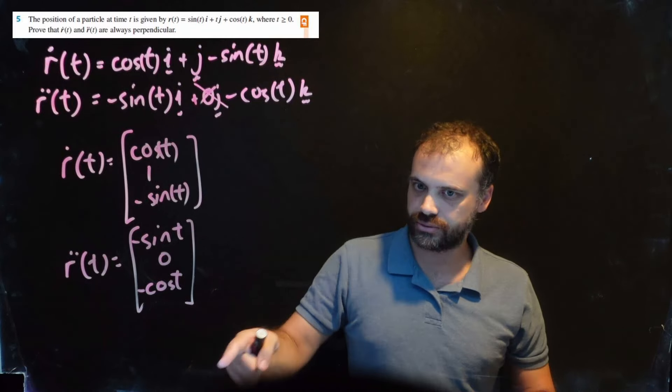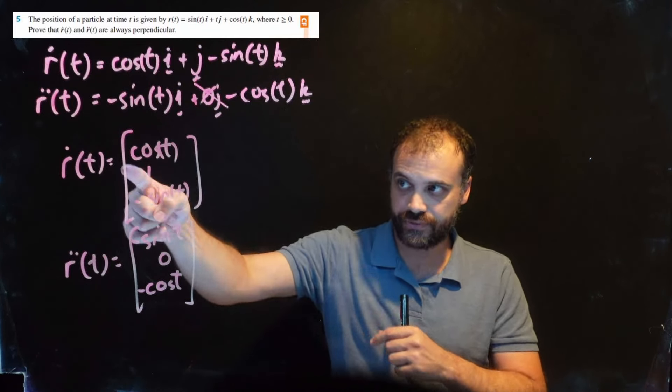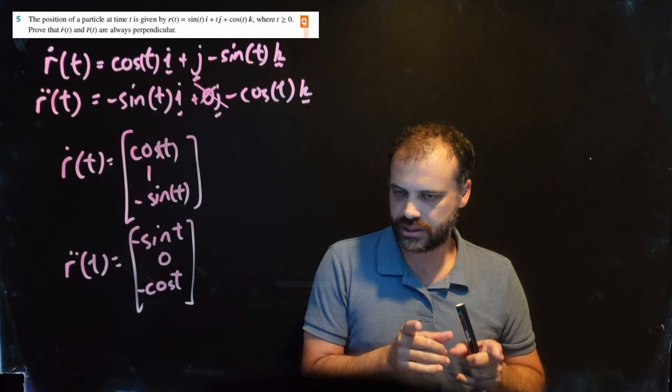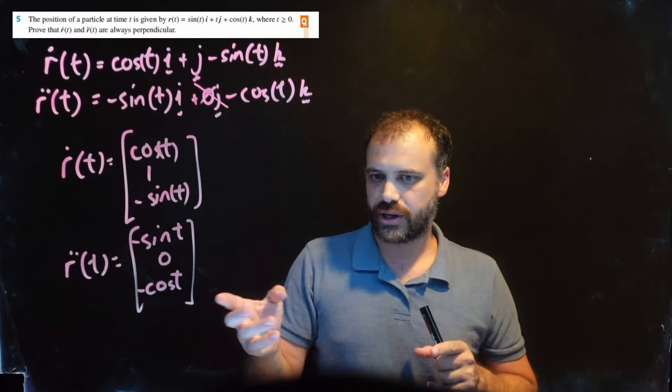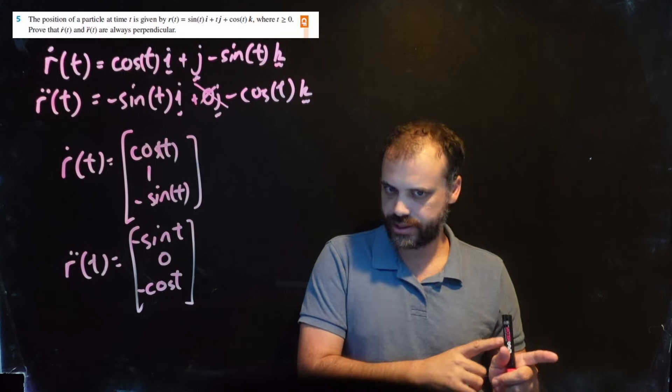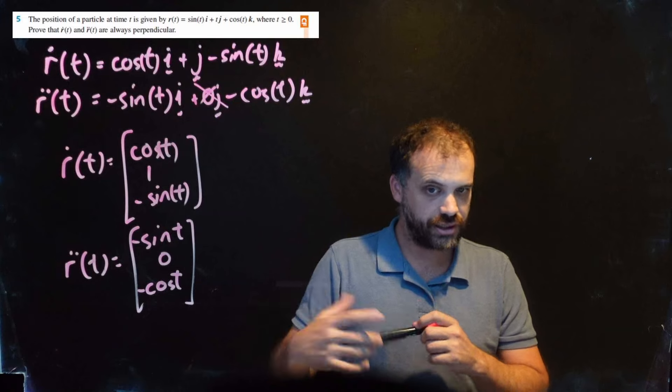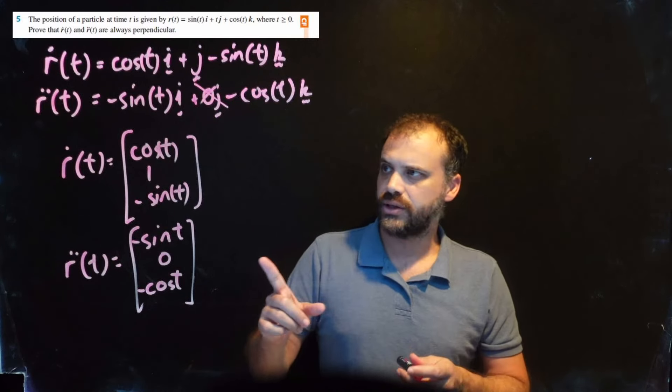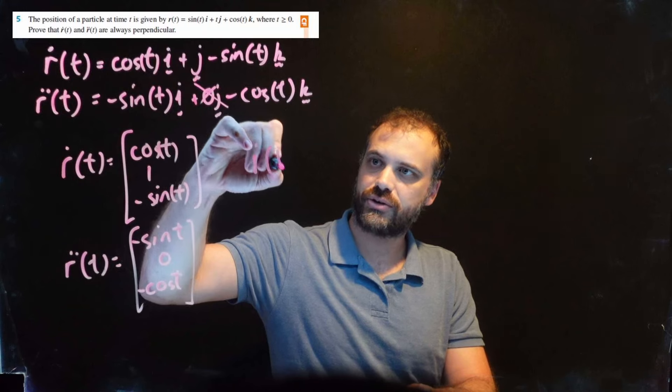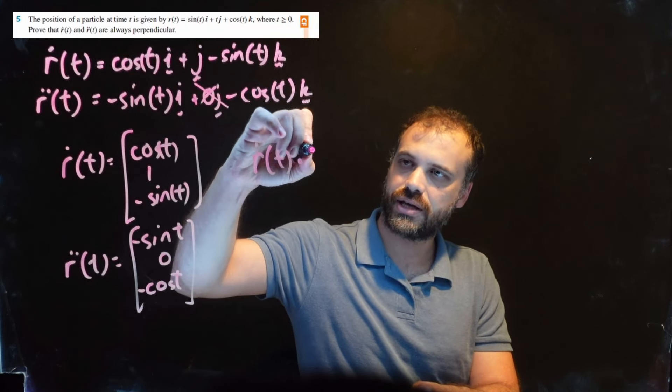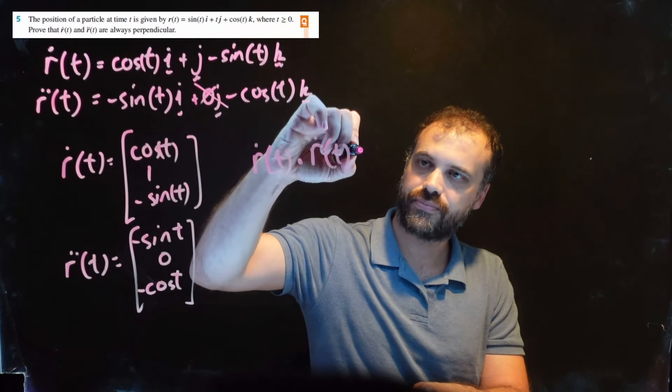If these two vectors are indeed always perpendicular, then the dot product will always be 0, and it doesn't matter what the value of t is - it'll just always be 0. Let's find the dot product of r'(t) and r''(t).